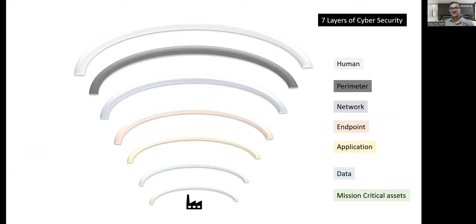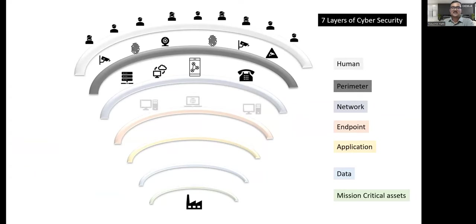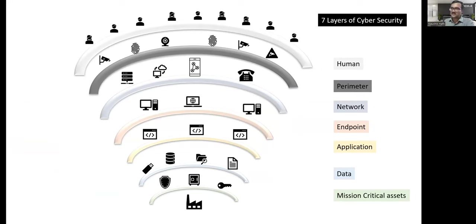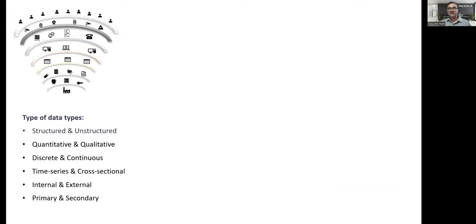Usually any organization will have these seven layers of cybersecurity, which can be categorized from human perimeter through to machine critical. All of these layers will have some activity, some data, logs, and monitoring. How do we capture all this data and make sense of it is the challenge. From all these seven layers of data we have different types: structured or unstructured, quantitative or qualitative, discrete, continuous, time series, and so on.